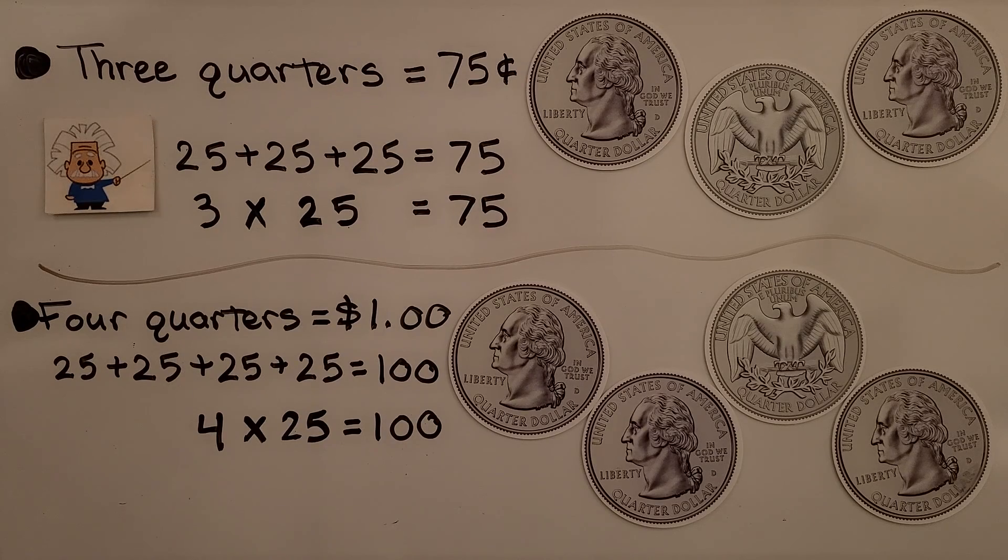By memorizing the increments, the multiples of 25 as 25, 50, 75, 100, we can quickly add groups of 25's by thinking of money and thinking that four quarters is equal to a dollar. So four 25's is equal to 100.